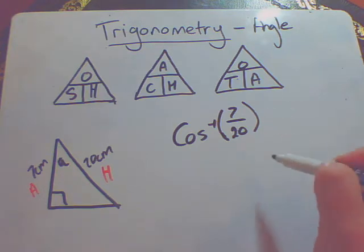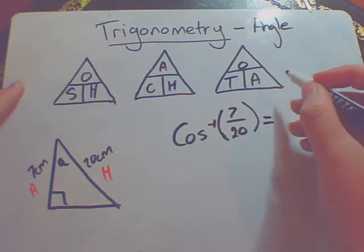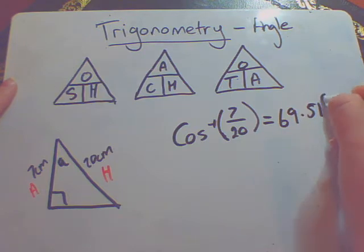So in this case, that is 7 divided by 20. If you type it into your calculator exactly as it is written, then you should end up with an angle of 69.51 degrees.